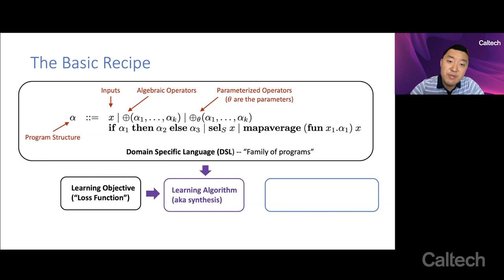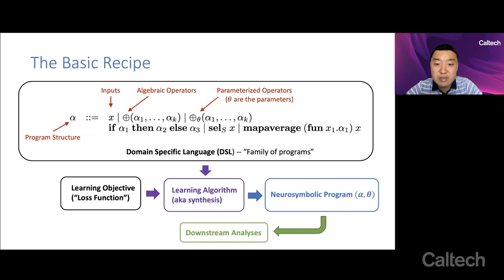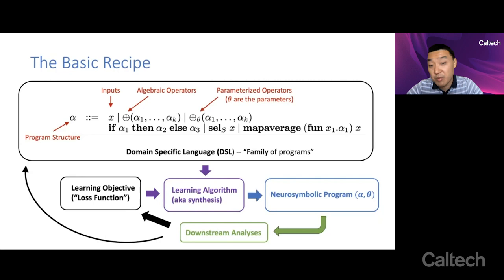You feed both of these things into a learning algorithm. This is also known as synthesis in the program synthesis community. What you get out from the learning algorithm is a neural symbolic program parameterized by the program structure alpha and its continuous parameters theta. You provide this program to the domain expert for various downstream analysis that's of interest. And from that, the domain expert might suggest a modified objective function or loss function, perhaps adding more training data or modify the domain-specific language structure itself. And then we repeat. So this is the basic recipe.